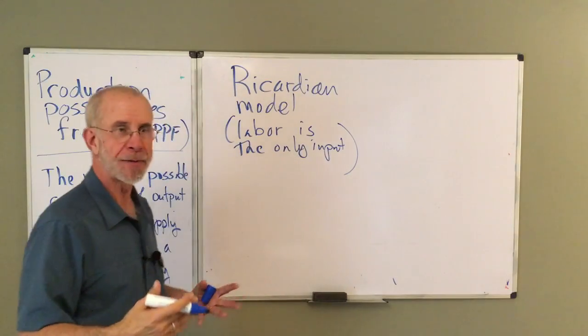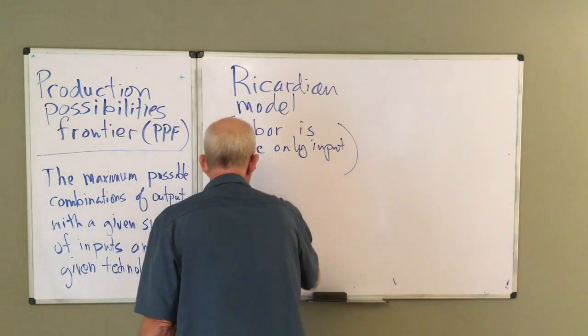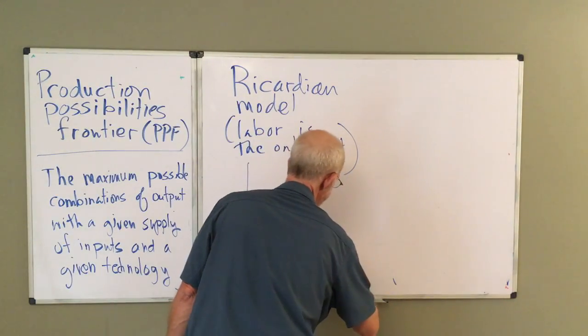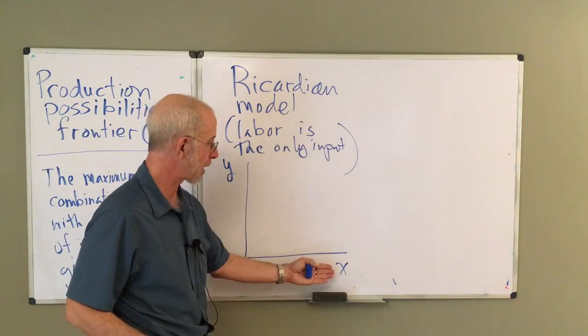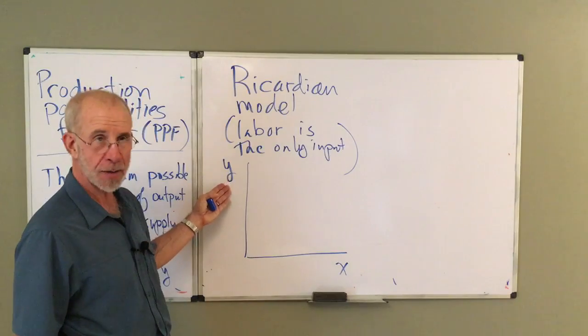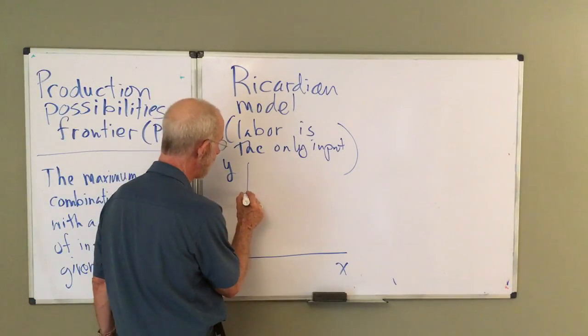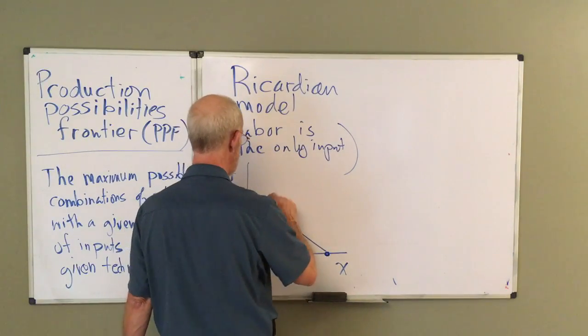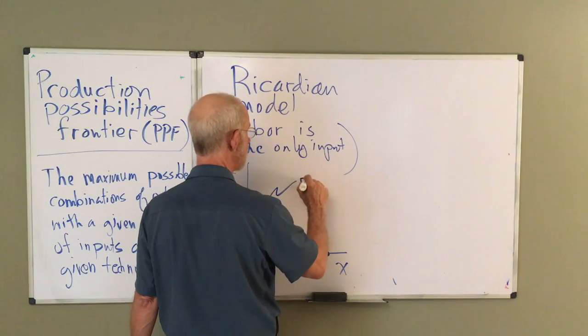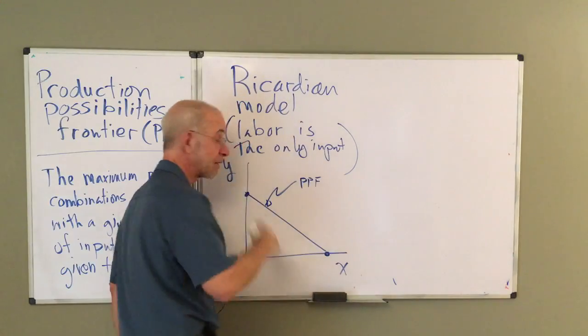One is in a Ricardian model where labor is the only input. Now, I have a separate video about the Ricardian model, but what I want you to keep in mind is if we've got two goods, Y and X, okay, so this is the production of good X, this is the production of good Y, the PPF of a Ricardian model is going to be a straight line.